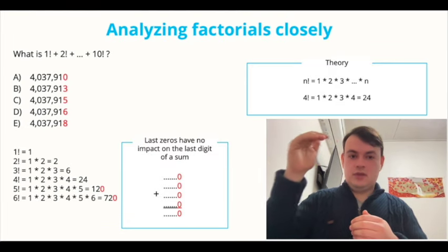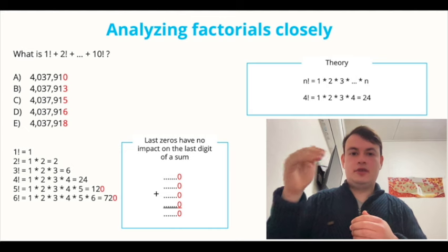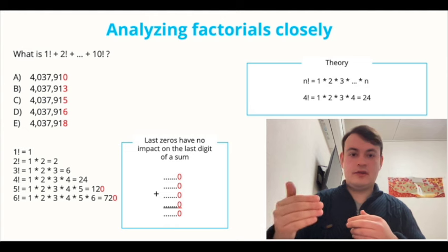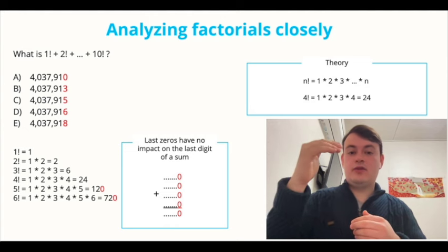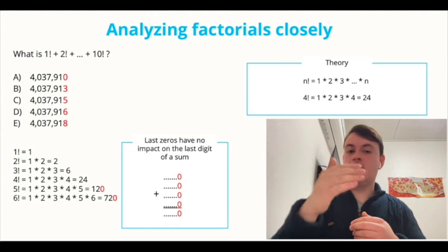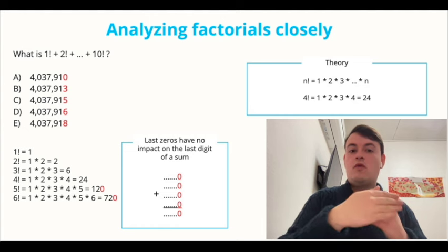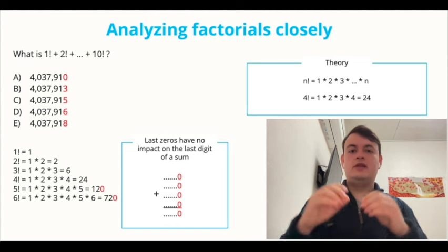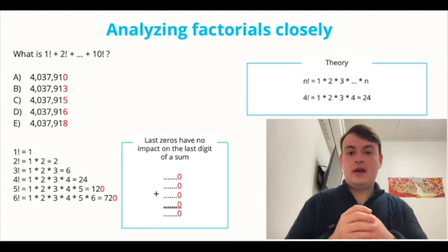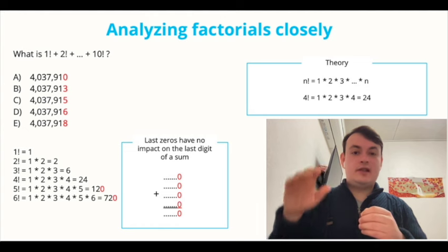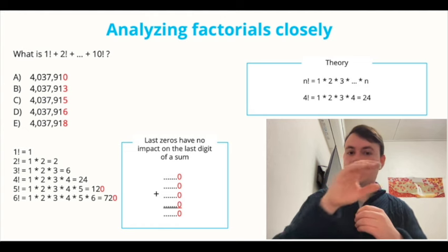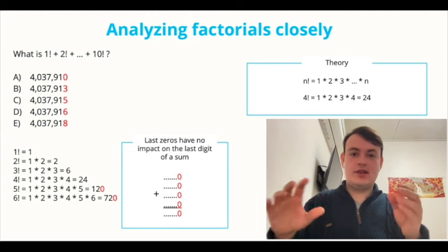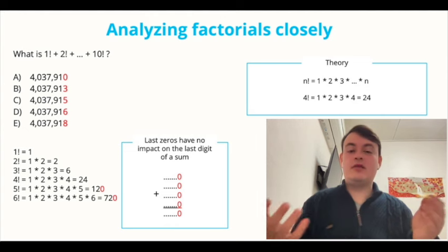Let's now analyze these factorials one by one and see what numbers are they equal to. So 1 factorial is 1, 2 factorial is 2, 3 factorial is 6, 4 factorial is 24, 5 factorial is 120, 6 factorial is 5 factorial times 6, or 720. Now let's stop here and look at the numbers we are getting. We can notice that 5 factorial and 6 factorial end with a zero. And as we have to find the last digit of the whole sum, there's actually quite a relief.